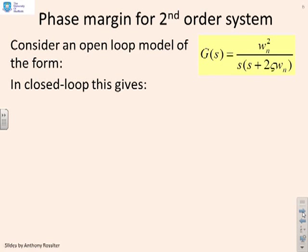Here's our classical simple second-order system: G equals omega_n squared over s times s plus 2 zeta omega_n. When we close the loop, you get your standard second-order form: G_c equals omega_n squared over s squared plus 2 zeta omega_n s plus omega_n squared.